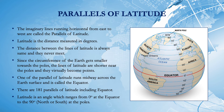One of the parallels of latitude runs midway across the Earth's surface and is called the equator. The equator is the biggest parallel of latitude, and as we move towards the poles, the size of each latitude gets smaller. There are 181 parallels of latitude including the equator — 90 towards the north pole and 90 towards the south pole. Latitude is an angle which ranges from 0 degrees at the equator to 90 degrees north or south at the poles.